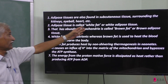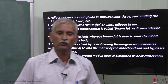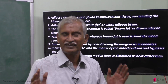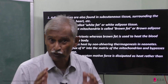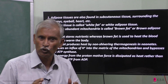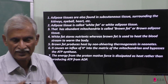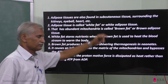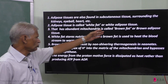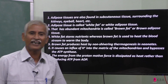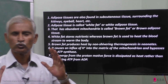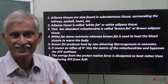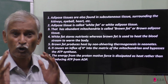Adipose tissue is called white fat. White fat is just accumulating and storing unused food materials. Then there is brown fat. Brown fat has too many mitochondria present in the fat cells, which is why it is called brown fat.